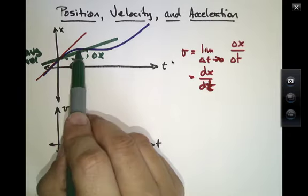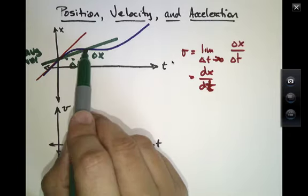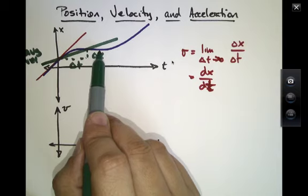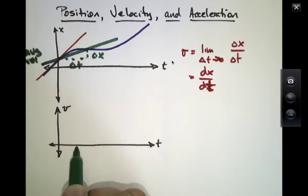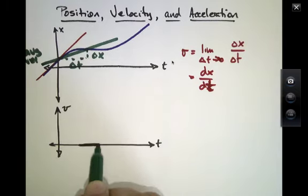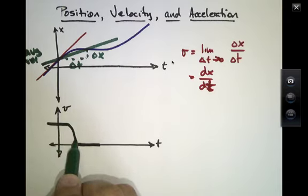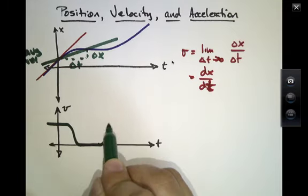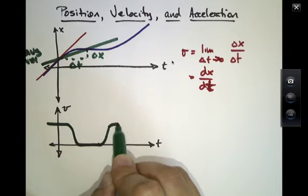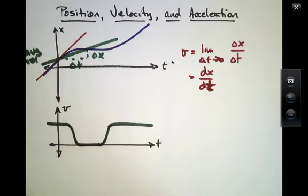It looks like all throughout this region, the graph is constant. So I expect the velocity to be 0 all throughout here.